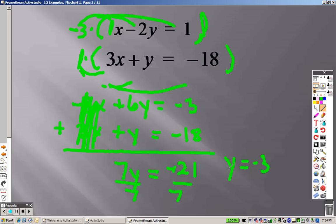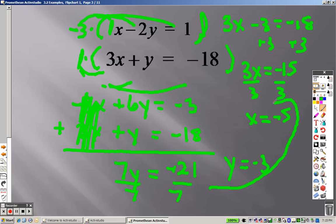From this point, you can just plug in whichever equation you want. I'm going to plug it into the bottom. 3x, I'm going to put minus 3 equals negative 18 instead of the y. I add 3 to both sides, so I get 3x equals negative 15. Divide both sides by 3, and I get x equals negative 5. And there is your answers. So you would write that as negative 5, negative 3.